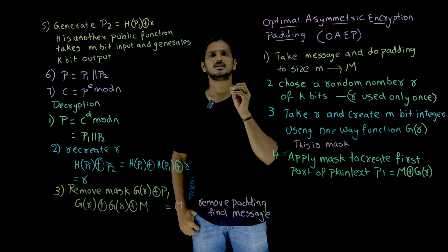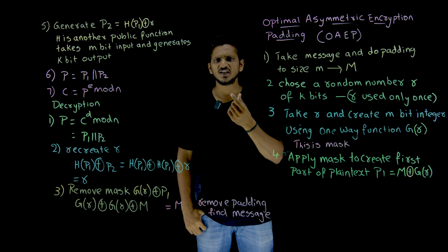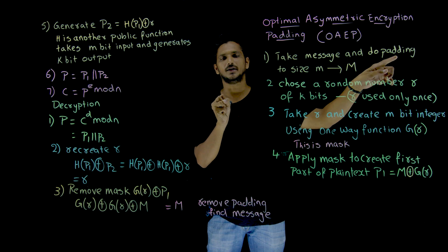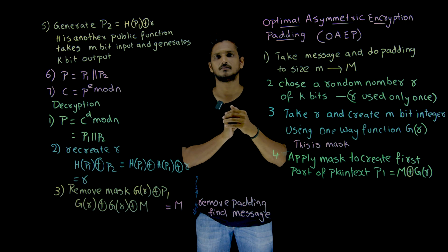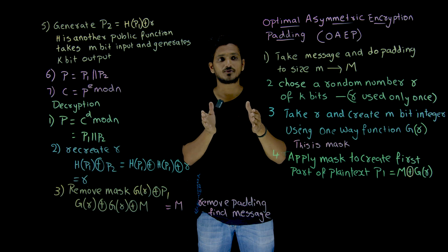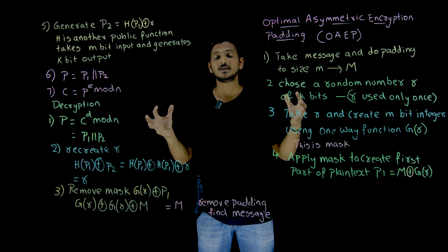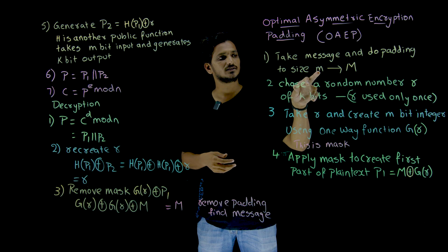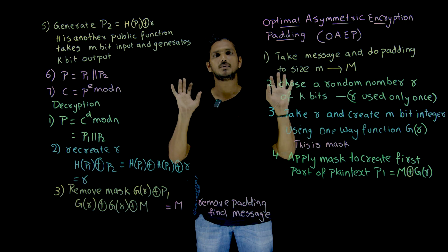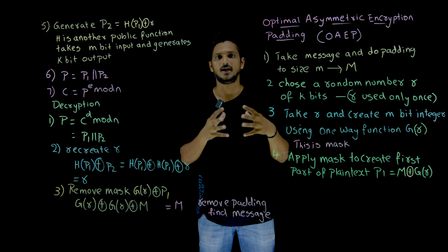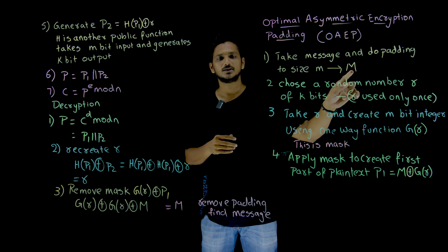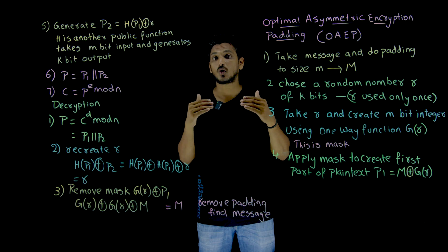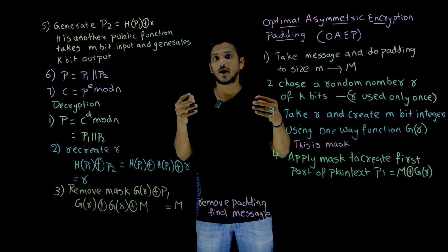Now what happens inside OAEP is, suppose if you want to send a message - let's take 'hello'. It is a very short message. So what we are going to do here: you take the original message and you add padding bits, making the message of size M. We are increasing the size of the message because we are having only a short message. We call this capital M, which means message included with padding.